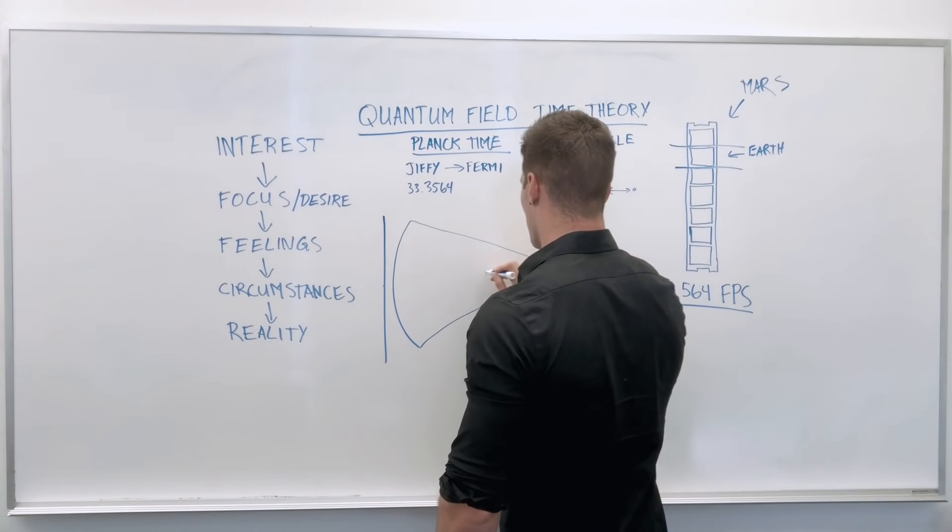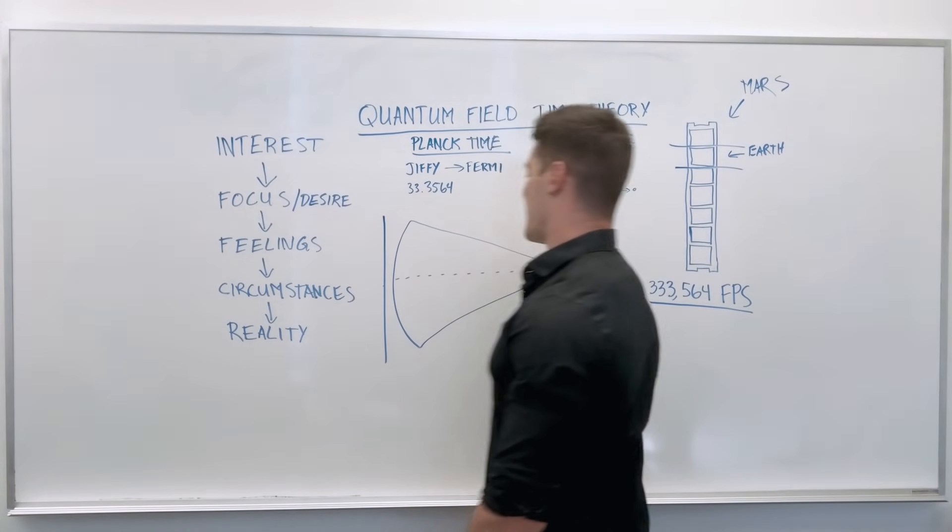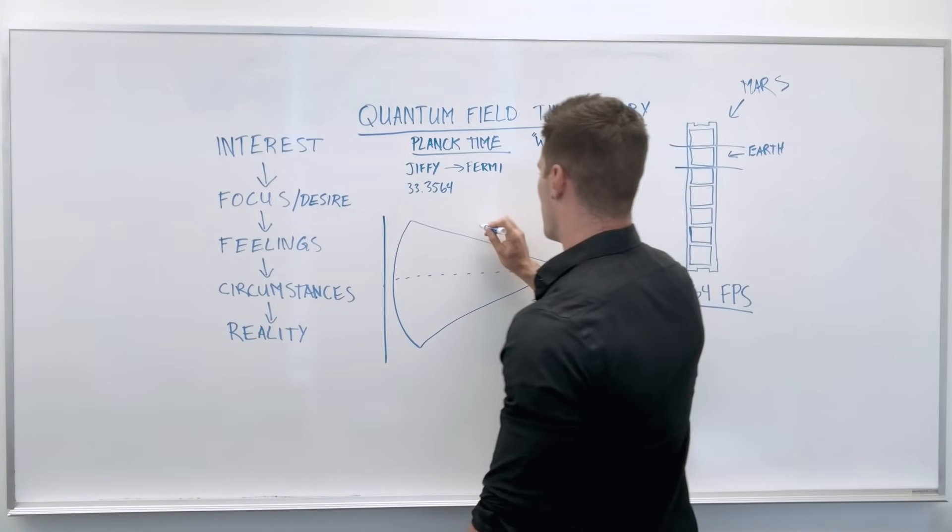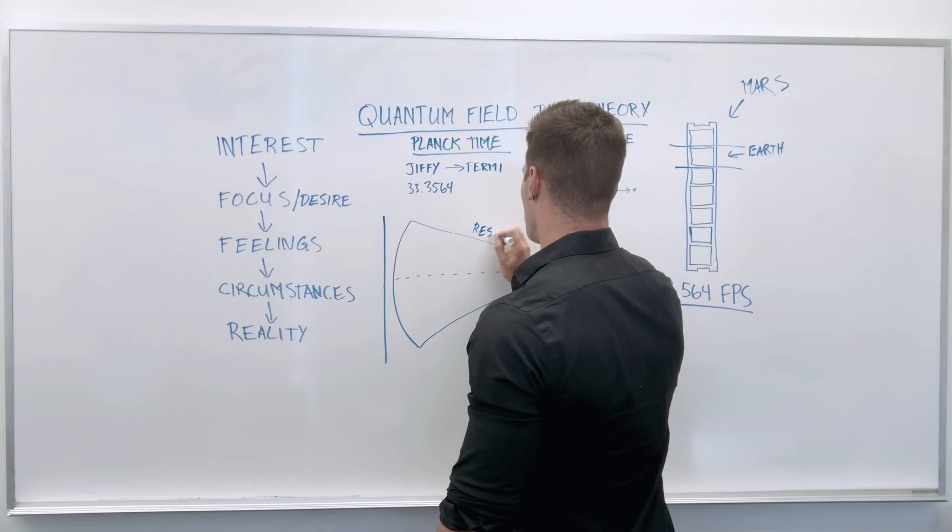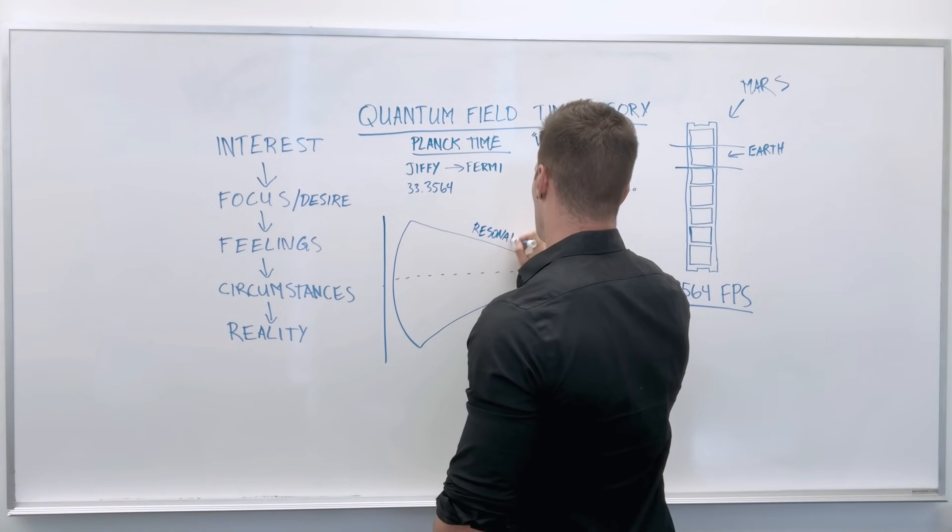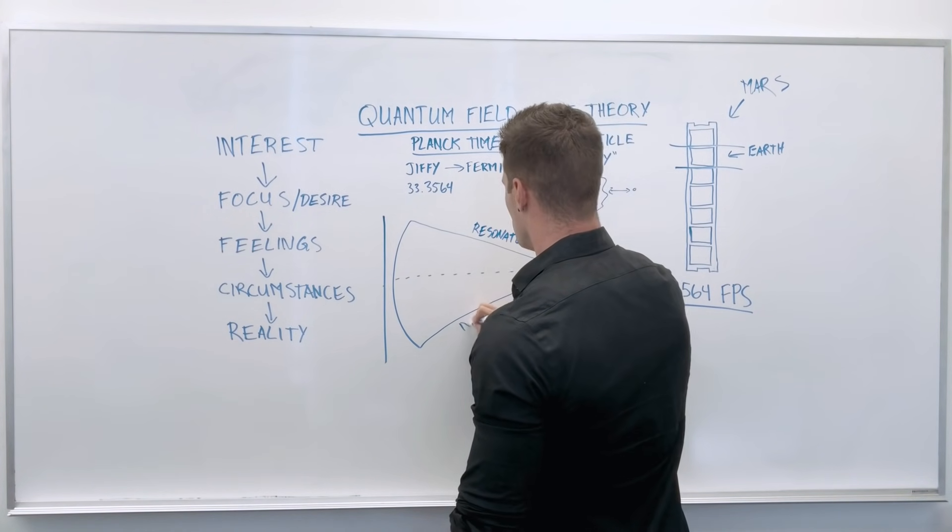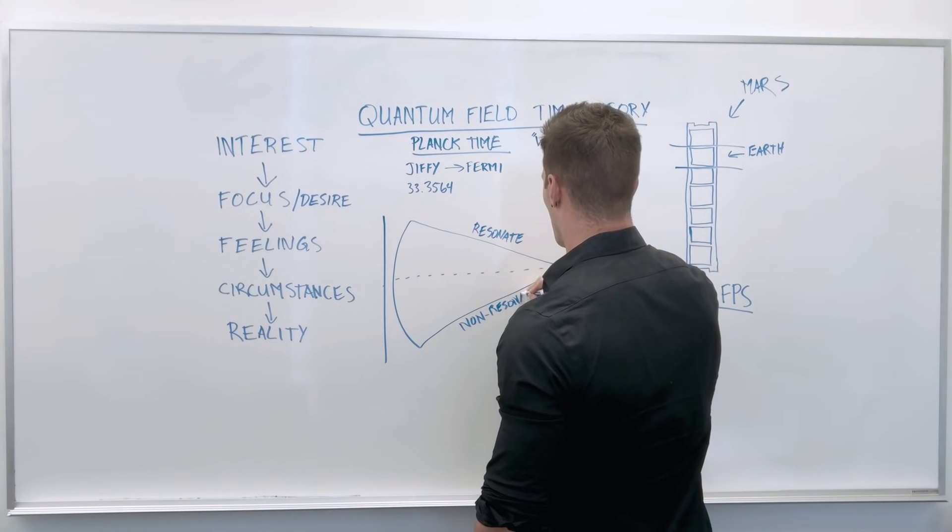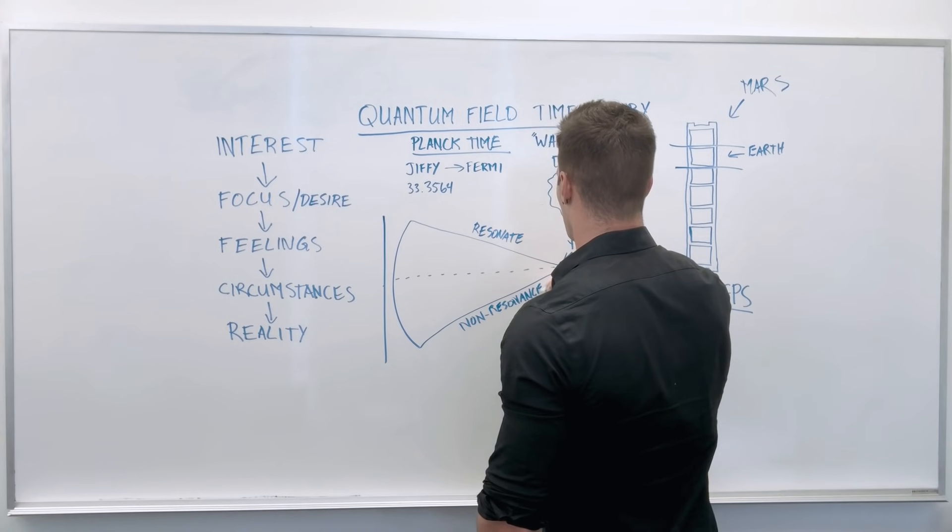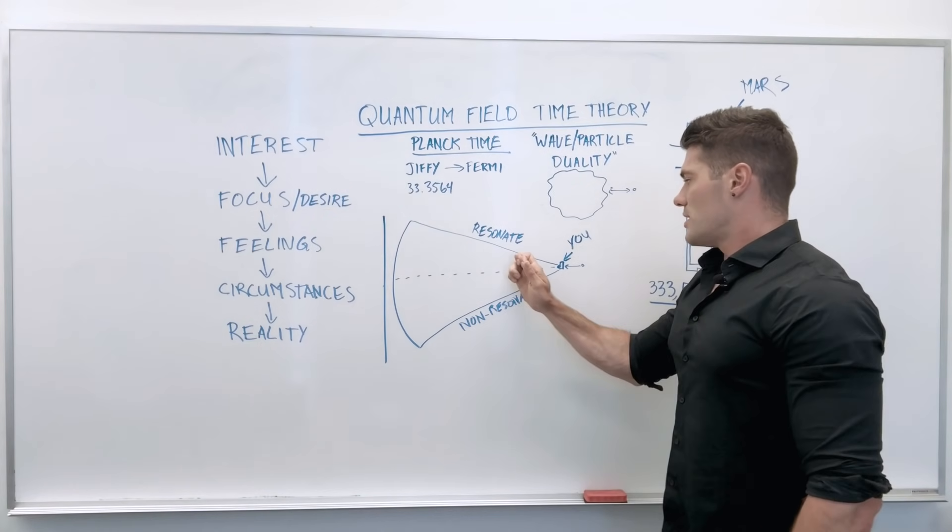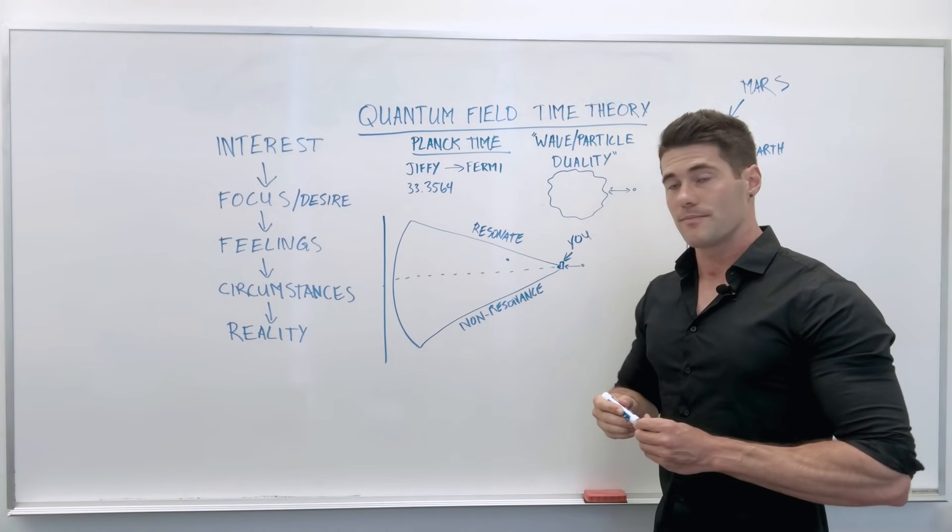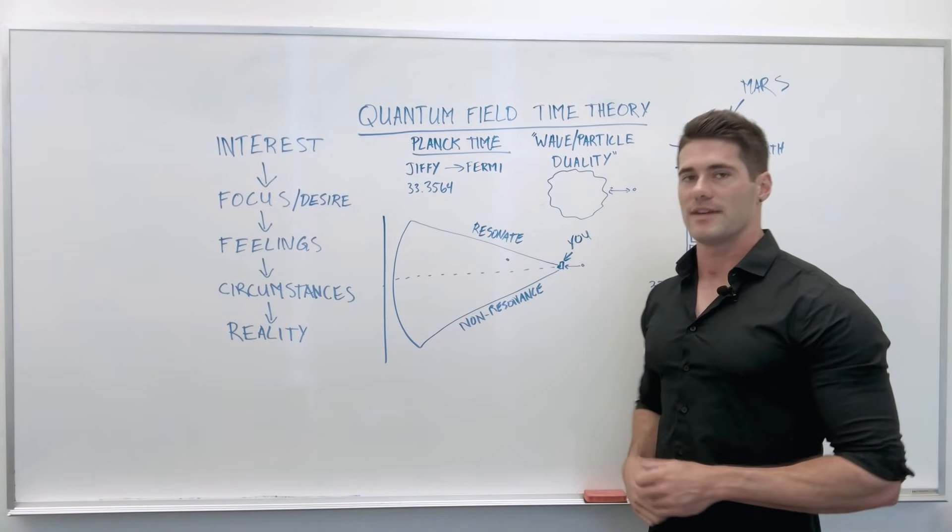We can divide this arbitrarily in half and say that this side of the wave are paths of resonance, things that resonate with you. The bottom side would be paths of non-resonance, things that don't make you feel good, things that you don't want to experience. Let's say I'm right here in my timeline. I'm 29 years old. I'm a spiritual teacher and this is the reality I've manifested for myself.